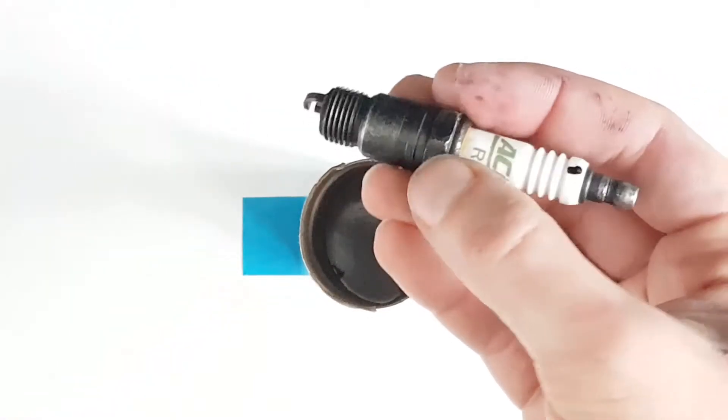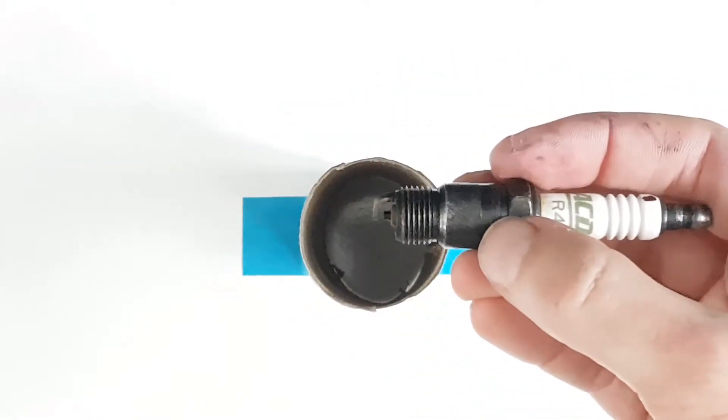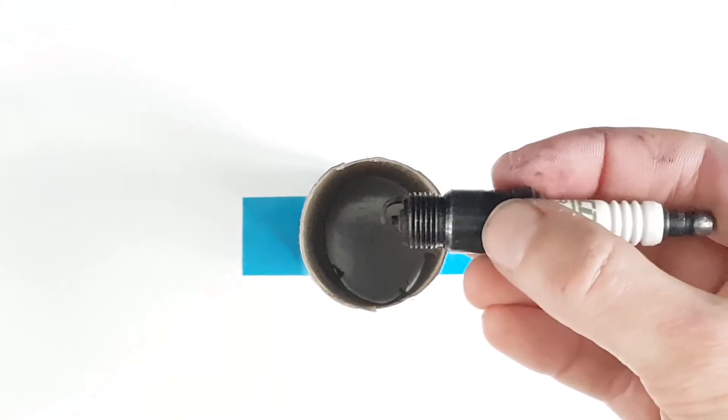So that's indexing a spark plug. It's making a mark on the outside so you know where the tip sits and then it allows you to position the spark plug as you want.